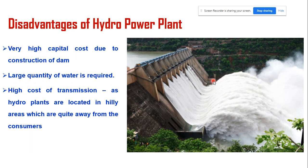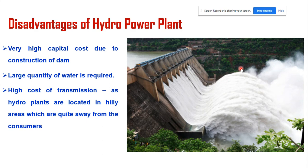The disadvantages of the hydro power plant are: a high capital cost is required for the construction of the dam, and a very large space is needed for water storage. A large quantity of water is required to generate a large amount of electrical energy. Since hydro power plants are located far away from consumers, the transmission of electrical power requires high cost, as electrical towers and transmission lines must be constructed.